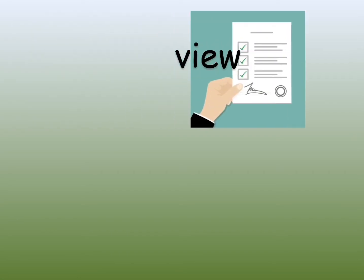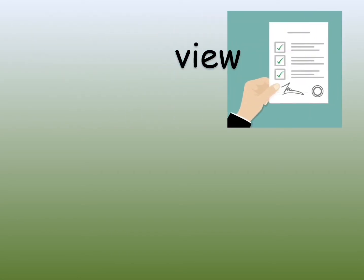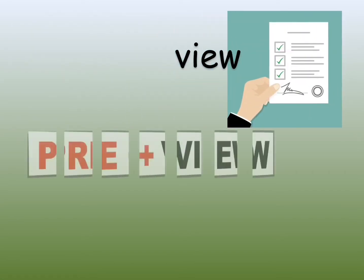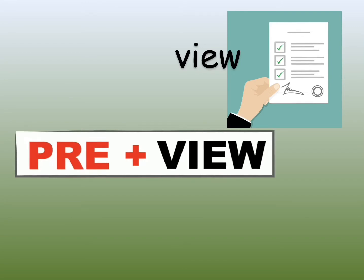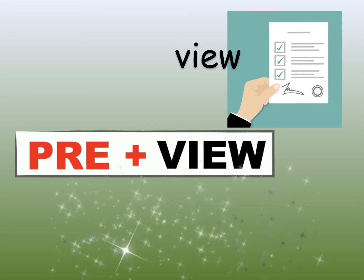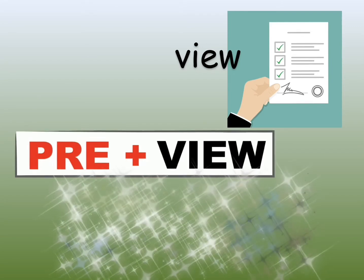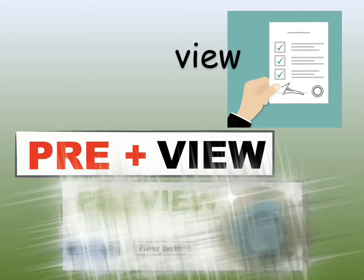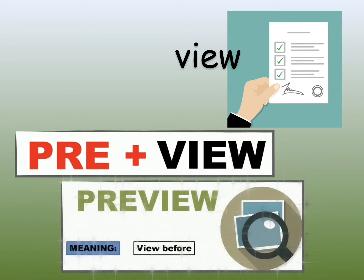View — to view something is to show it to everyone. Preview: preview is to be shown or described before it is available to be seen by everybody.